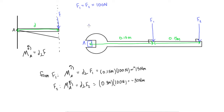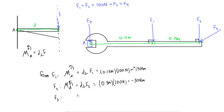What if we have F3 pointing like this — in a direction whose line of action passes right through point A? If a force's line of action passes through a point, it will not cause a moment about that point. That's easy to see from the formula: the perpendicular distance to the line of action is zero, so zero times whatever force we have equals zero. From F3, the moment about A equals 0 times 100, which equals 0.